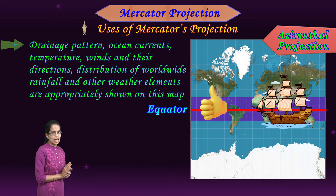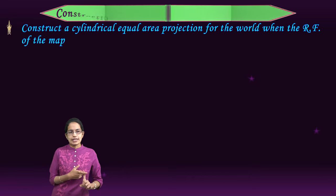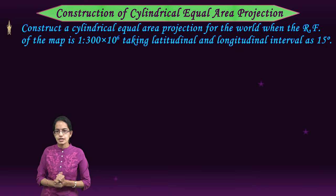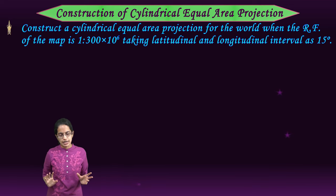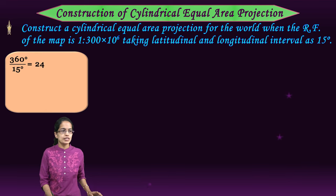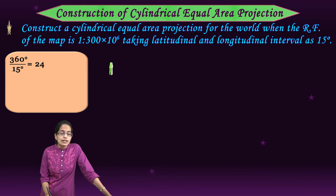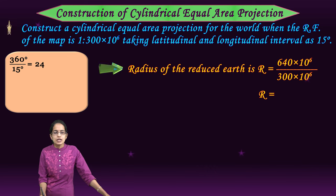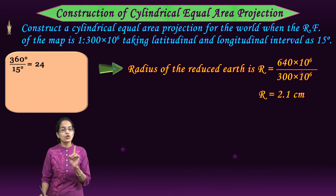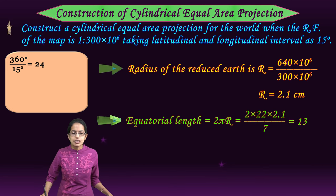The next projection is cylindrical equal area projection. Here the RF is 1 to 300 million at 15-degree intervals. The radius of the reduced earth: 6,400 km × 10⁵ cm ÷ (300 × 10⁶) = 2.1 centimeters. The length of the equator is 2πr = 2 × (22/7) × 2.1 = 13.2 centimeters. I take the radius of 2.1 cm with a compass and draw a circle, then mark angles at 15-degree intervals: 15, 30, 45, 60, 75, and 90.